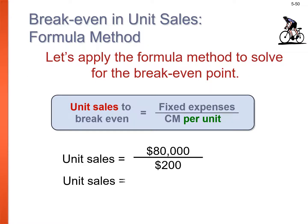The formula method for break-even: unit sales to break even = fixed expenses ÷ contribution margin per unit. Take $80,000 fixed expenses divided by $200 CM per unit = 400 units needed to reach zero profit. It's a more direct approach than manipulating the full equation.